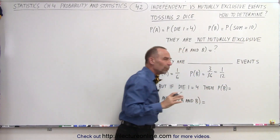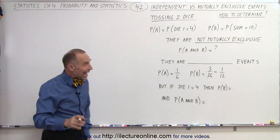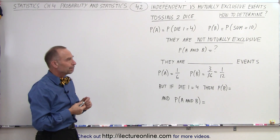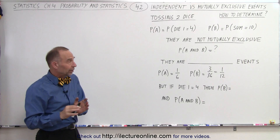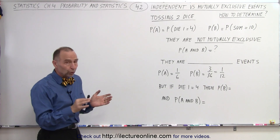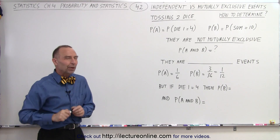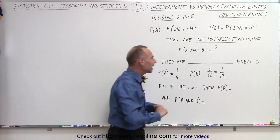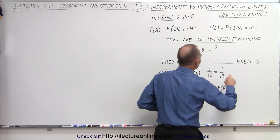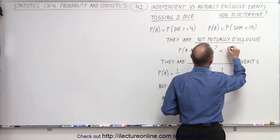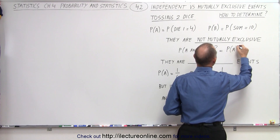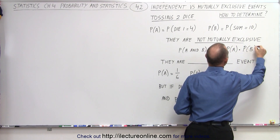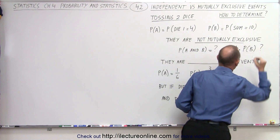So what is the probability of events A and B occurring at the same time? Typically you would think that's equal to the probability of A times the probability of B, but is that indeed the case? That's the question.